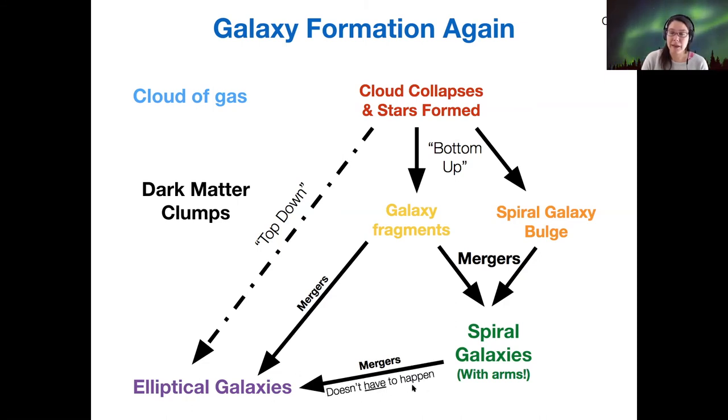But this doesn't have to happen. And that's good. I mean, we're not yet an elliptical galaxy, but once Milky Way and Andromeda collide to become Milkomeda, that will probably be an elliptical in the end.